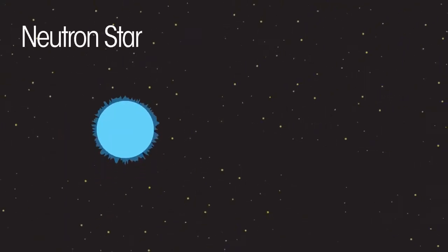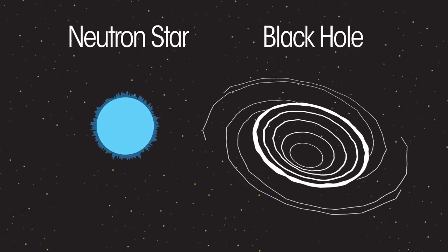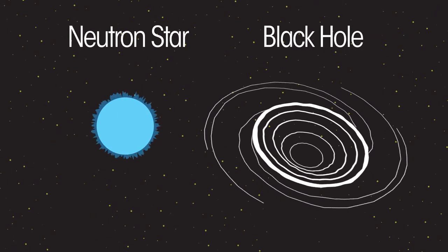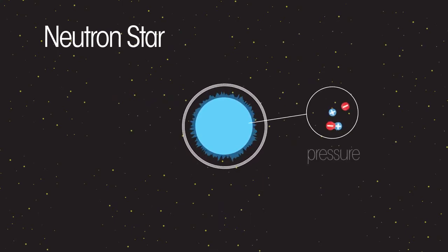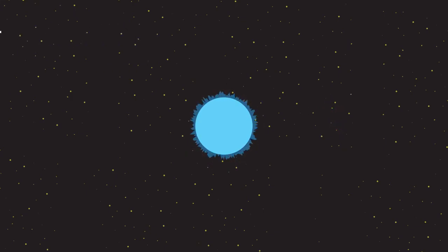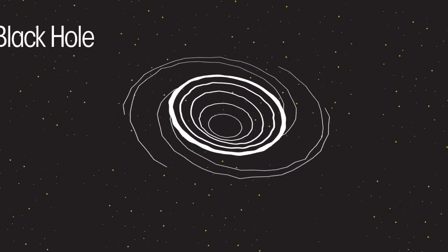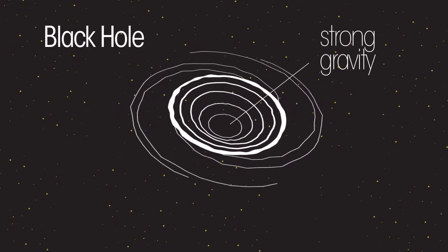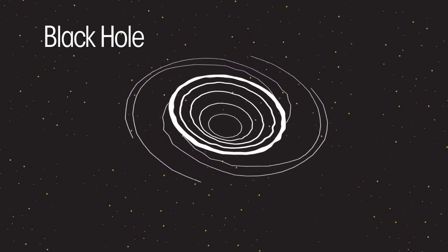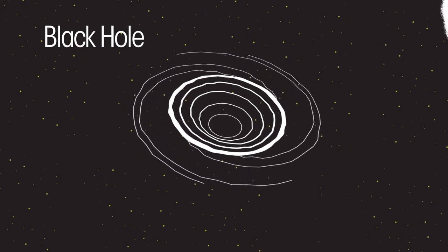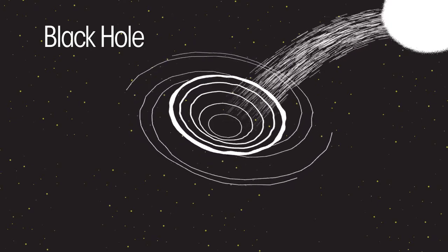One of two things can happen next. Either a neutron star or a black hole is formed. A neutron star is made of densely packed neutrons, formed when under immense pressure electrons are forced to merge with protons. A black hole is formed if the mass of the neutron star is sufficiently high to cause further gravitational collapse. A black hole has such strong gravity that even light cannot escape it. We cannot yet observe a black hole directly, but we can detect it by the effects it has on nearby objects such as stars.